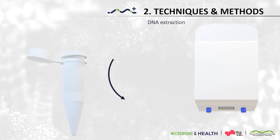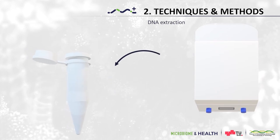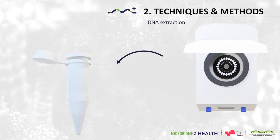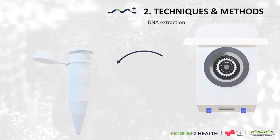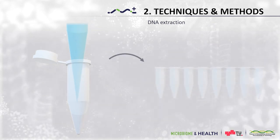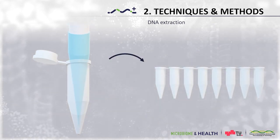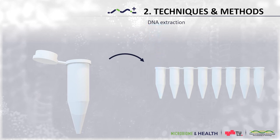We can detect bacteria, archaea, fungi, algae, and protists in their natural habitat by targeting their barcode genes. This allows us to study the composition of a whole community and analyze microbial networks in their natural habitat.